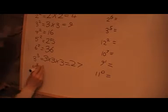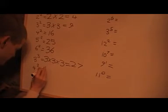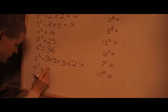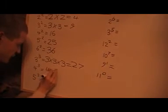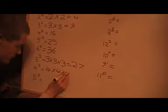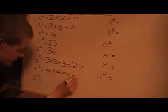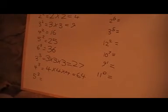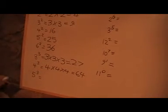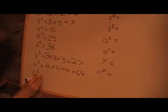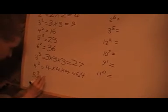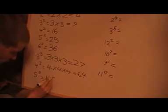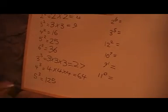And for 4 cubed, I've got 4 times 4 times 4, which is 64. And you can check that on the calculator if you're not sure. And 5 cubed is 5 times 5 times 5, which is 125.